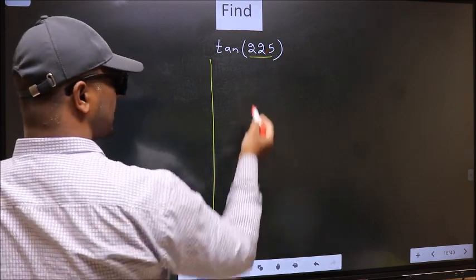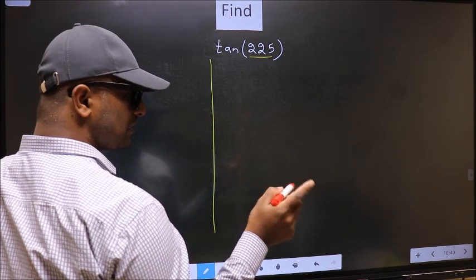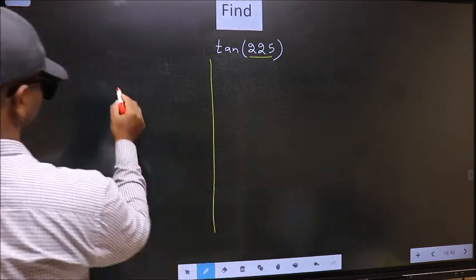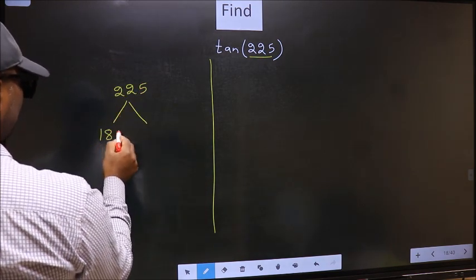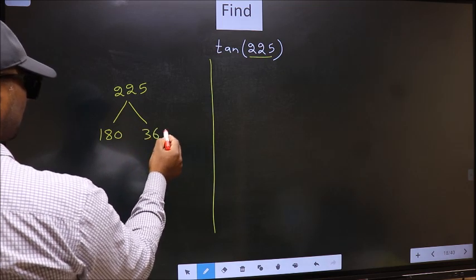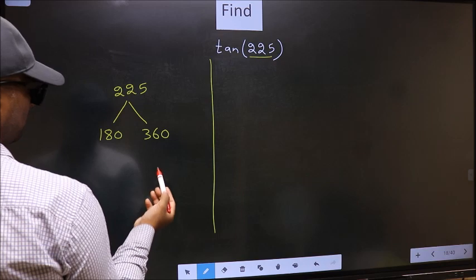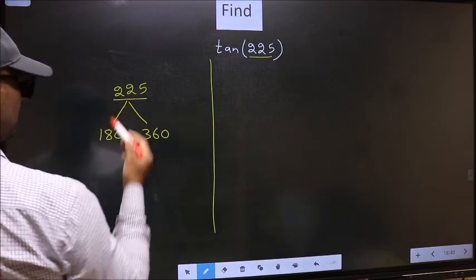Now you should check, 225 lies between which two multiples of 180. What I mean is, 225 lies between 180 and 360. This is 180 into 1 and this is 180 into 2. Between these two numbers, 225 lies.